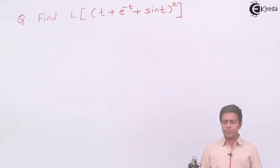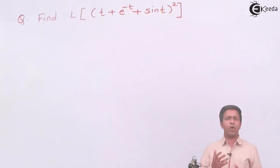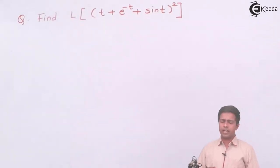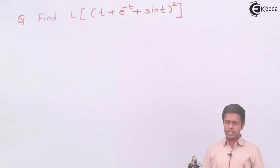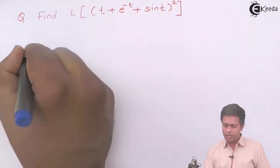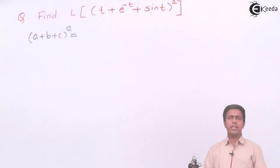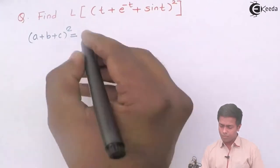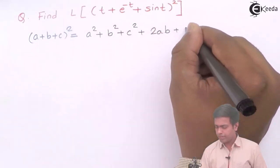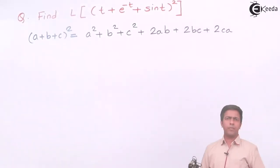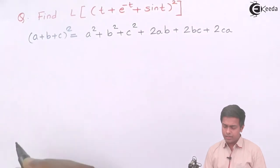If we expand this function, we might see that form. There are three terms adding each other with a square outside the bracket, so I'm going to use the algebraic formula: (a + b + c)² = a² + b² + c² + 2ab + 2bc + 2ca. Here the value of a is t, b is e^(-t), and c is sin t.